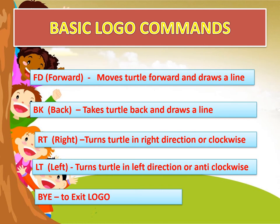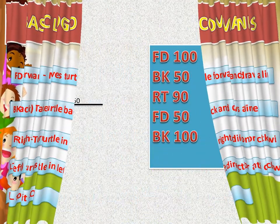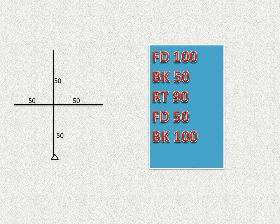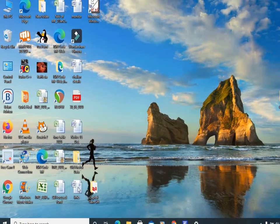Here is a simple example on paper. My turtle is at the center, which is the home position. I give FD 100, which moves the turtle ahead 100 points and draws a line. BK 50 takes the turtle back by 50 points. Then RT 90 turns the turtle right. FD 50 moves it ahead, and BK 100 takes it back.